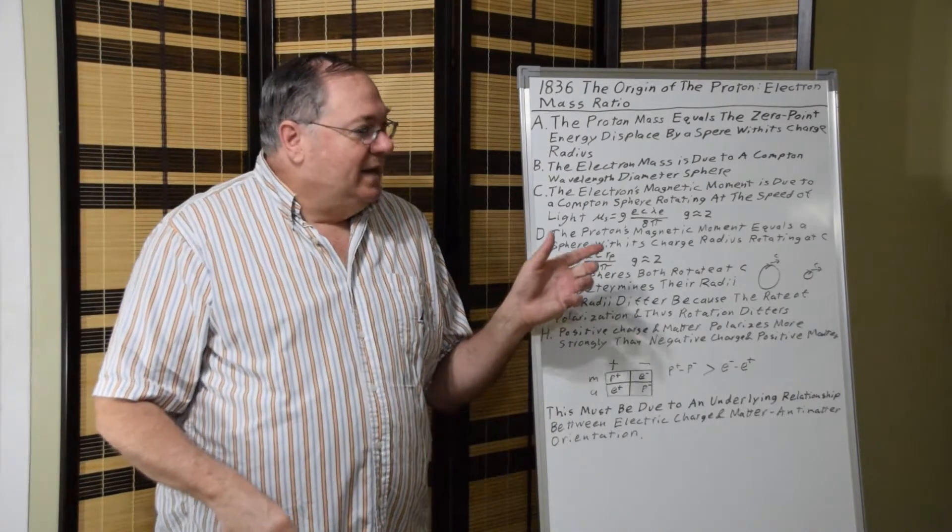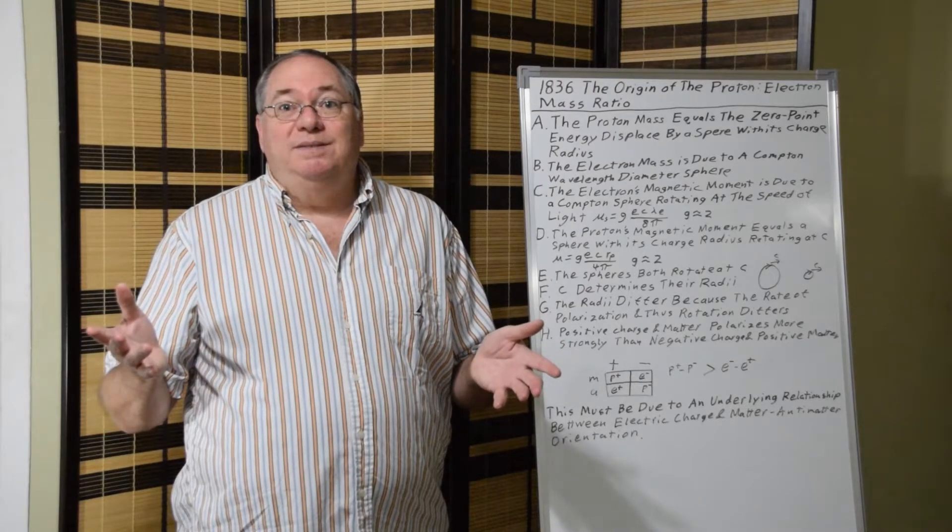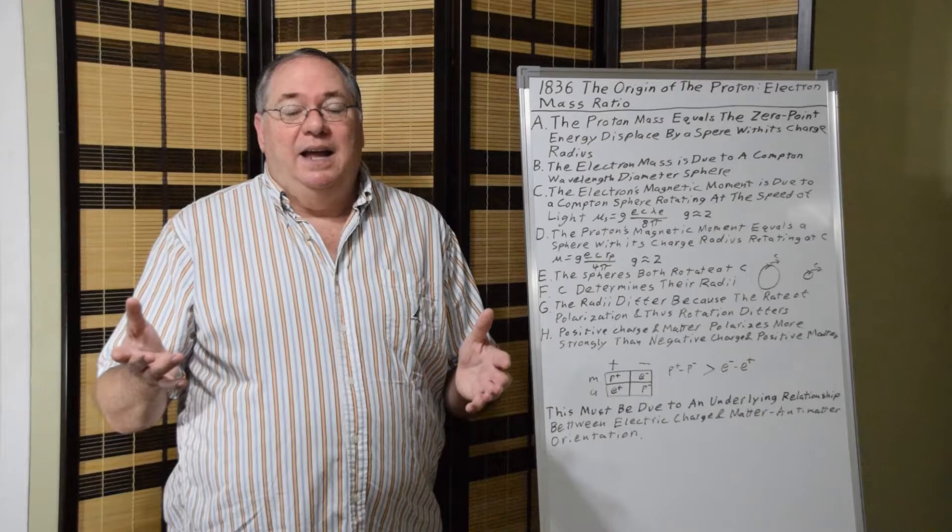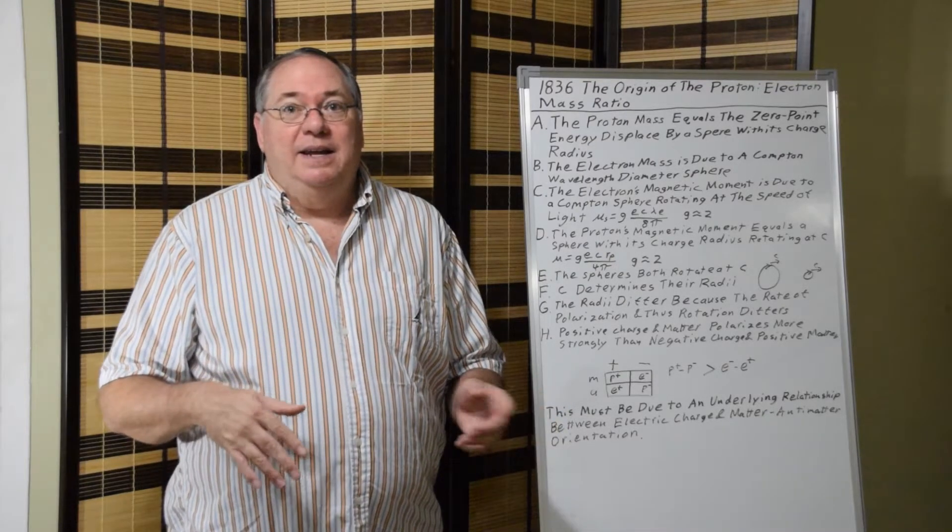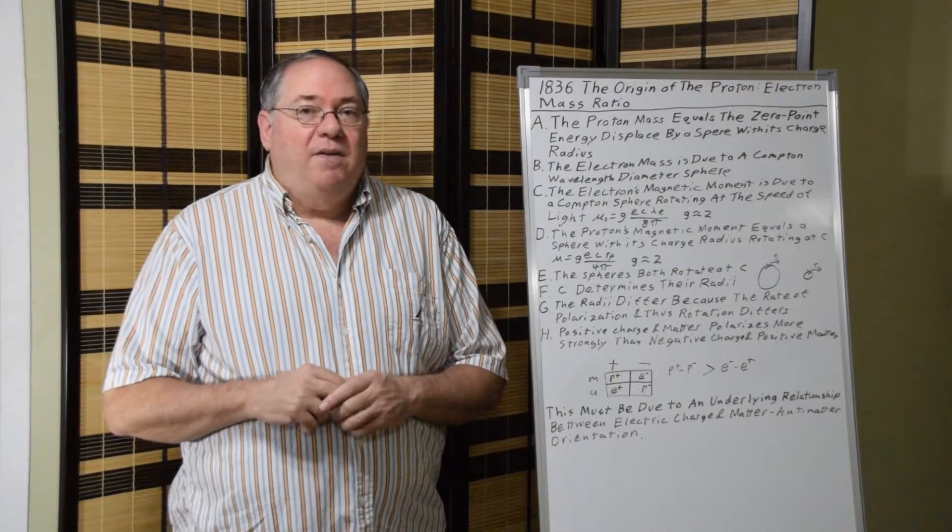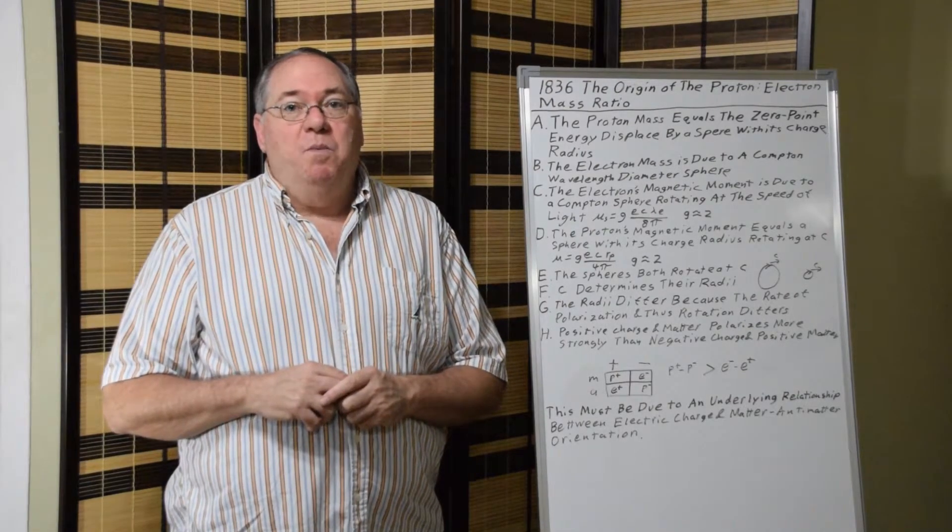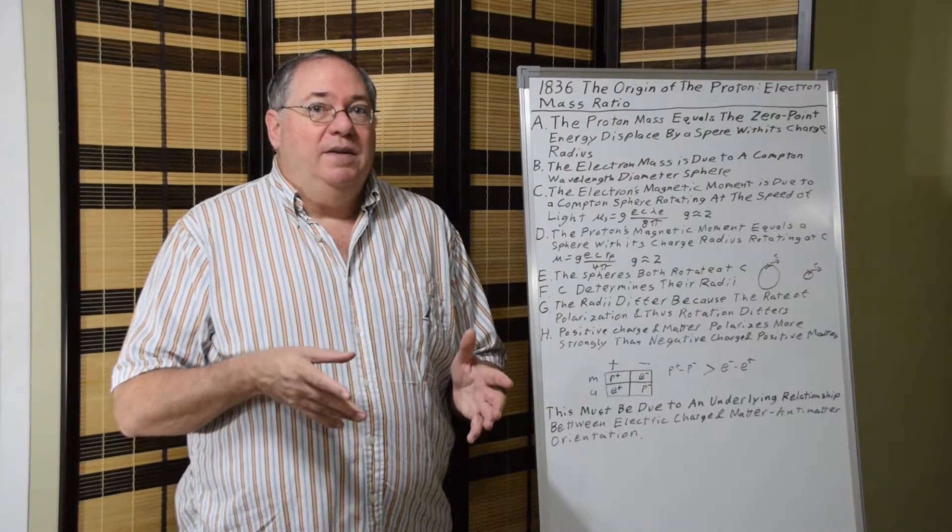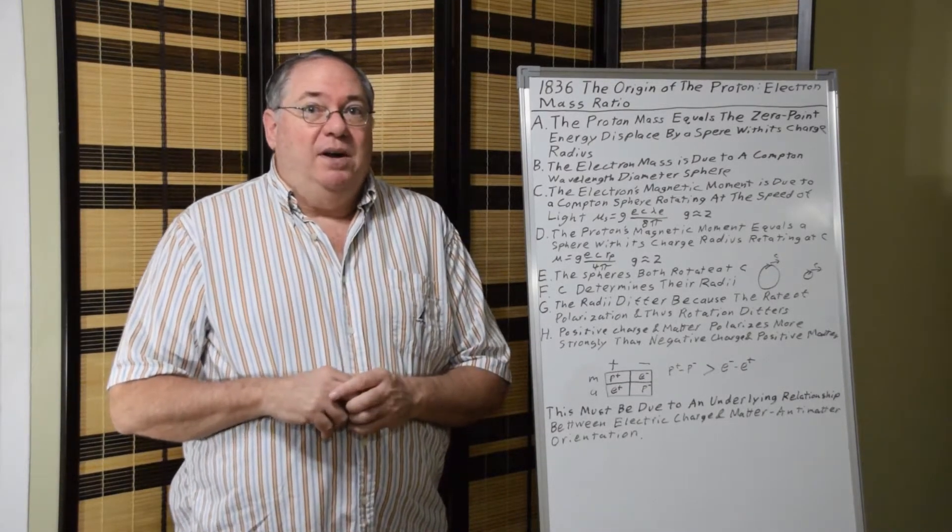But the key is, why do we have two different sizes? Why is the electron so much larger at its Compton wavelength than the proton at its charge radius? That can only be one thing, and that's the rate of rotation of the dipoles involved.